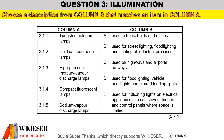In question 3.1.1, tungsten halogen lamps are used for flood lighting, vehicle headlights, and aircraft landing lights.